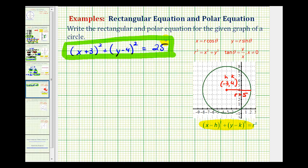And now to find the polar equation for the circle, we'll start by multiplying this out. So we'll have x plus three times x plus three plus y minus four times y minus four equals 25.